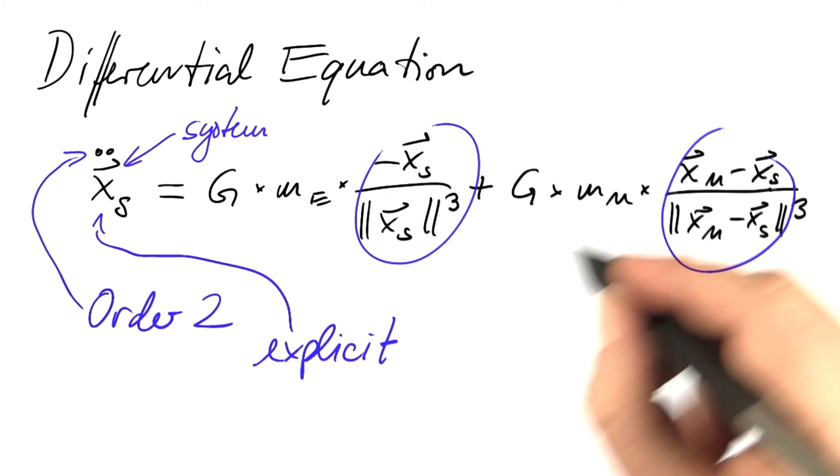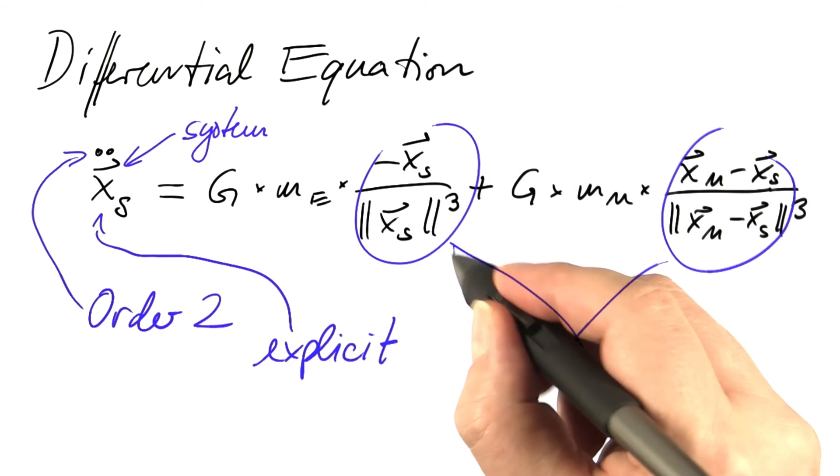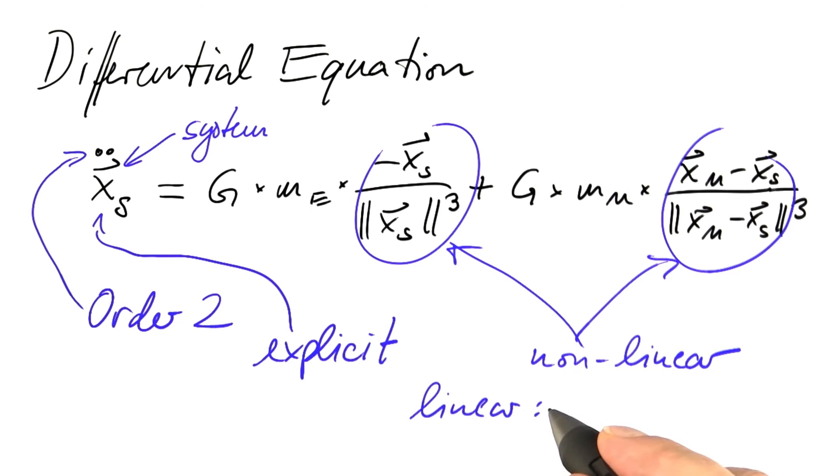And these two terms mean that this differential equation is nonlinear. A linear differential equation would only contain terms such as 42 times xs or sine of t times xs.